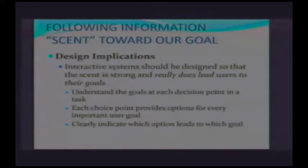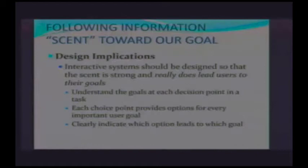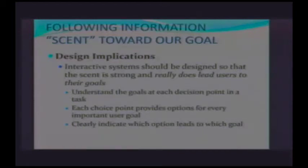What are some of the design implications? We want to design interactive systems that really help lead our users in the direction they want to go, so that it's easy for them to find what they need and accomplish their goals. When you use an application or go to a website, it's not about how it was coded — it's about accomplishing your goal. You want to understand the goals at each decision point in a task. Each choice point should provide options for every important user goal, and you want to clearly indicate which option leads to which goal, so that you don't send your users off on a wild goose chase.